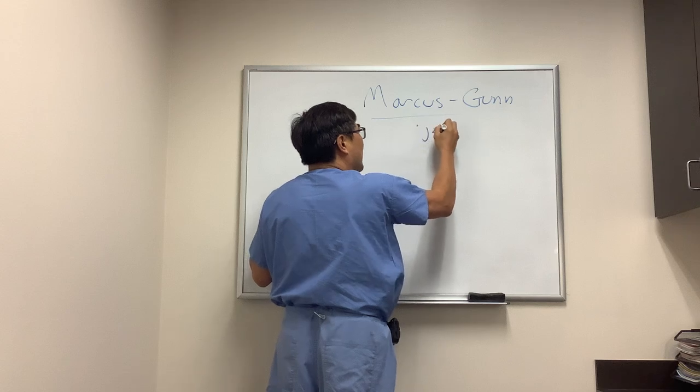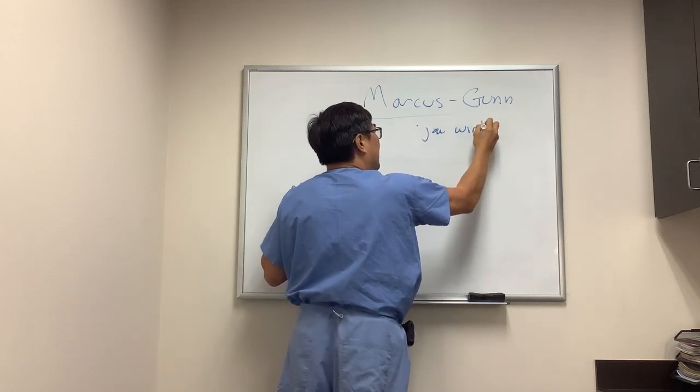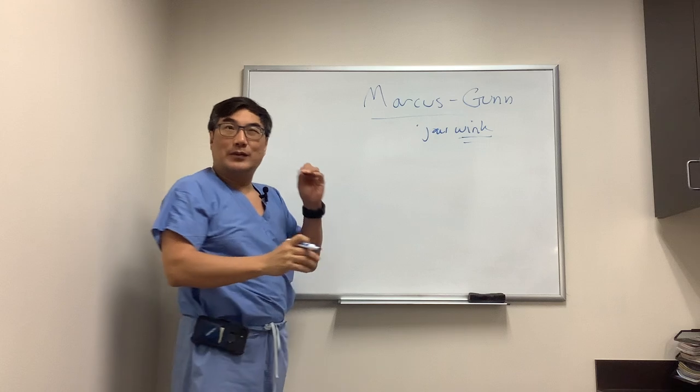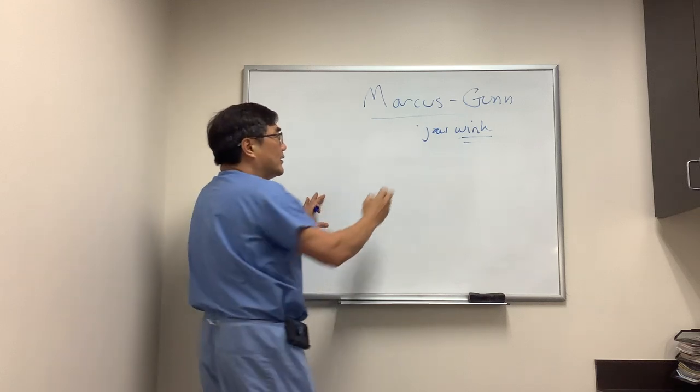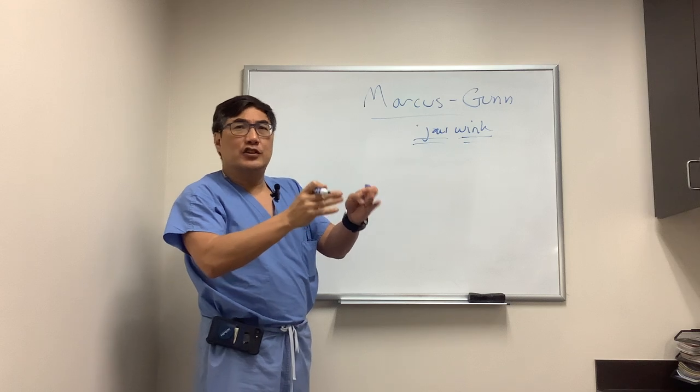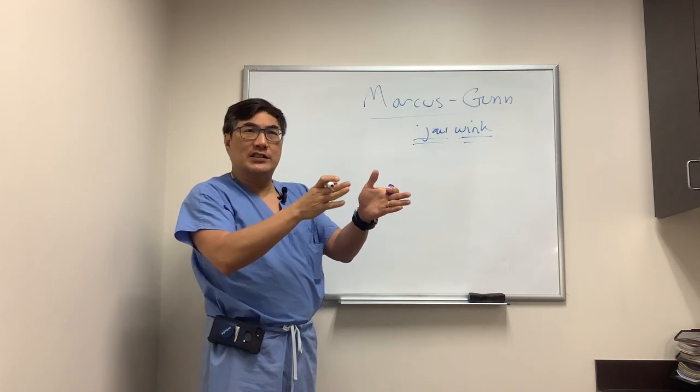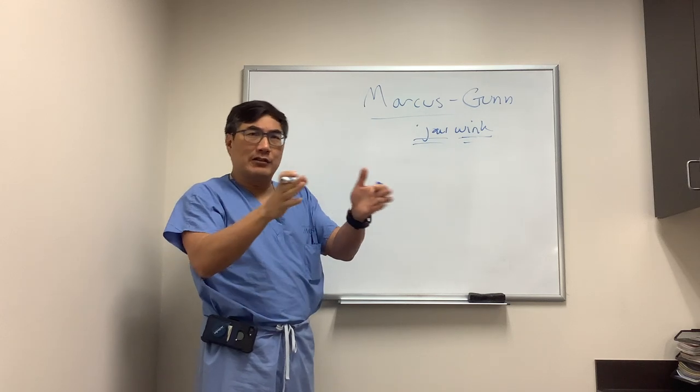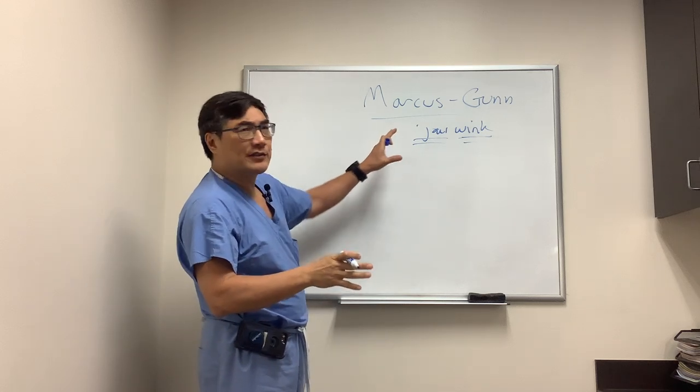The Marcus Gunn jaw-wink is when the eyelid winks as the jaw moves. The jaw is under control of the motor branch of the trigeminal nerve. When the pterygoids fire, either the lateral or medial pterygoids or other muscles involved in your jaw,